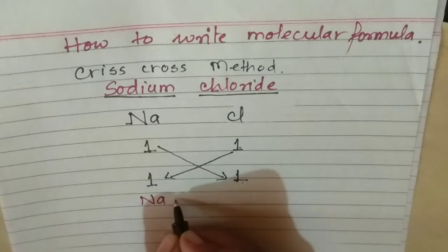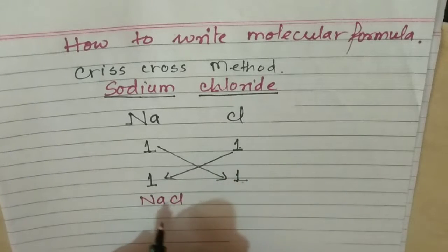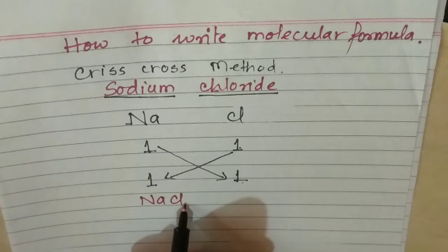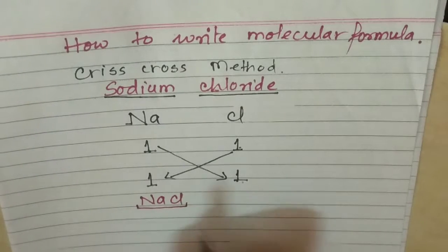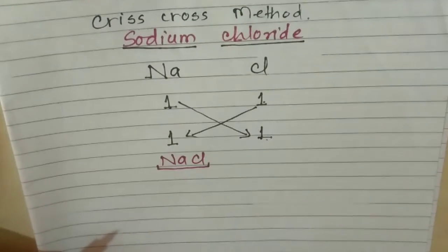The result is NaCl. We do not write 1, but one atom of Sodium and one atom of Chlorine is present. This is the molecular formula of Sodium Chloride.